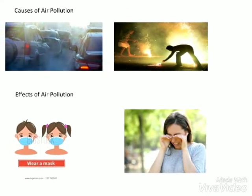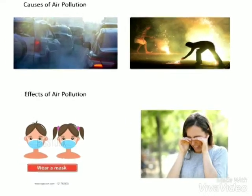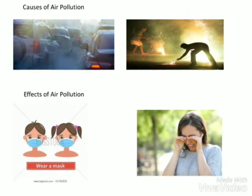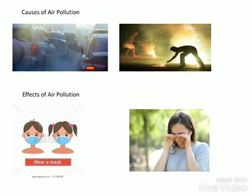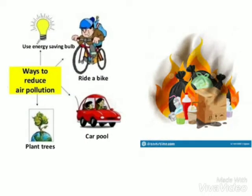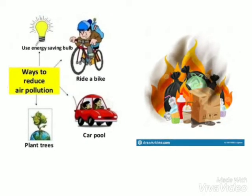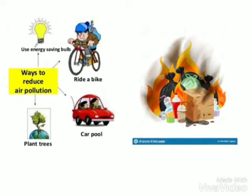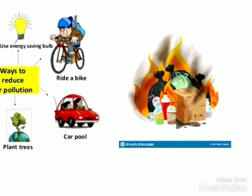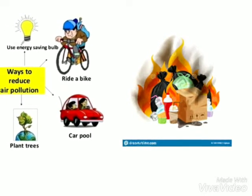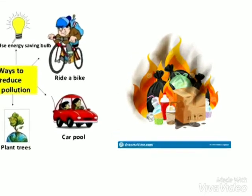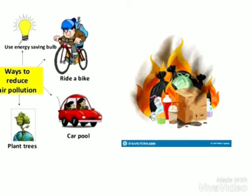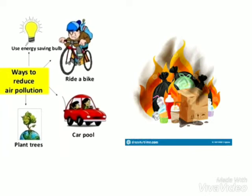How can we stop air pollution? We can make use of buses instead of cars. We can walk or cycle to places nearby instead of using vehicles. If you are staying very nearby to your school, you can either walk to school or ride your bicycle. You can also use a carpool, which means many people travel together in one car instead of everyone using separate cars.